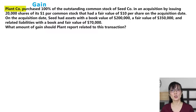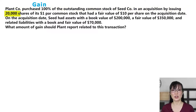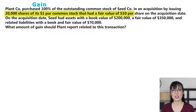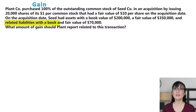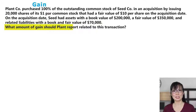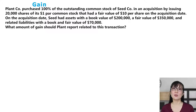Now let's go to the rest of the prompt. Plant purchased 100% of the outstanding common stock of Seed in an acquisition by issuing 20,000 shares of its $1 par, that had a fair value of $10 per share on the acquisition date. On the acquisition date, Seed had assets with a book value of $200,000, a fair value of $350,000, and related liabilities with a book and fair value of $70,000. Don't be intimidated by the sheer number of words — just break it down sentence by sentence.